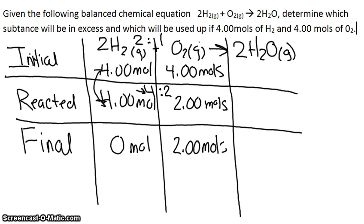For H2O, for the initial and the reacted, it's always X. And then there are 4 moles reacted. And that ratio is 2 to 2 for H2 and H2O. So you produce 4.00 moles of H2O in your product.